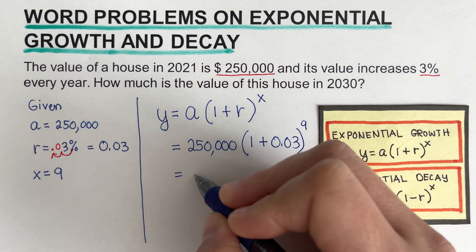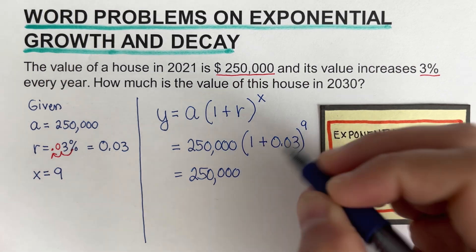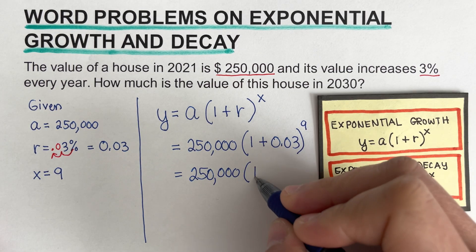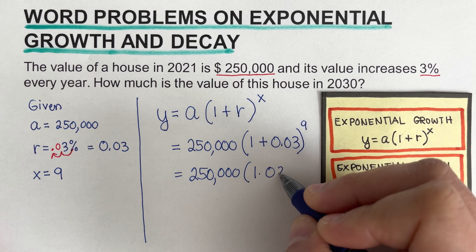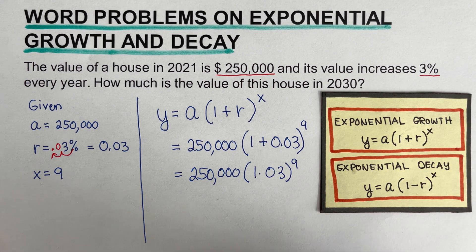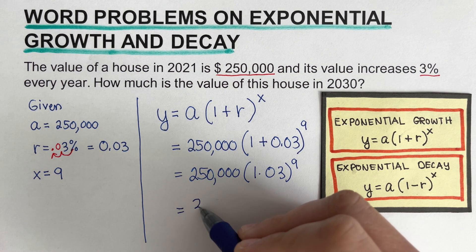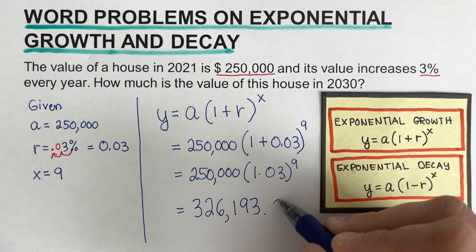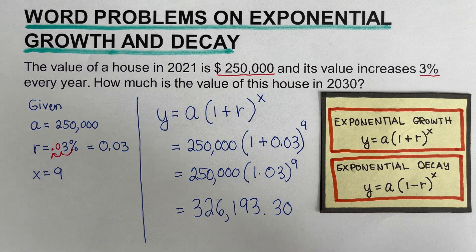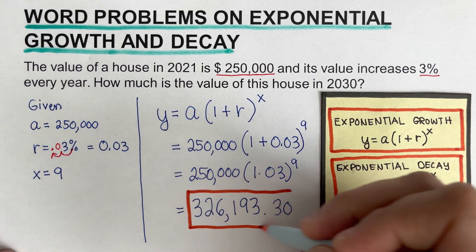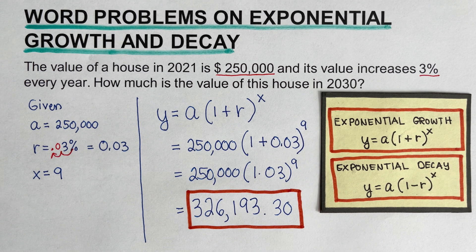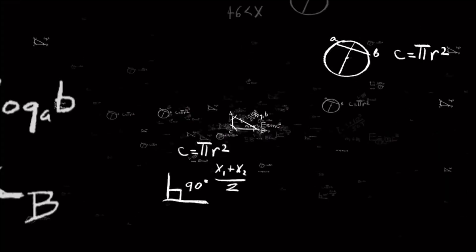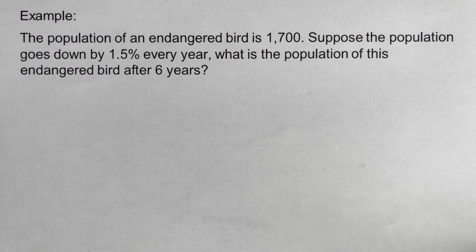Simplifying, we add one plus 0.03 to get 1.03 raised to the power nine. Using a calculator, this comes out to $326,193.30. So this is the value of the house — which was initially $250,000 in 2021 — in 2030, provided the increase remains a constant 3%. I encourage you to pause this video, try the next problem on your own, then unpause and check your answer.